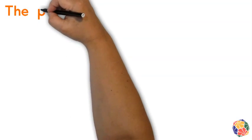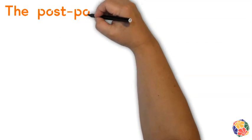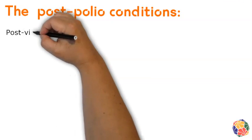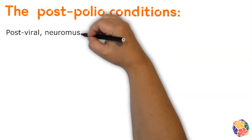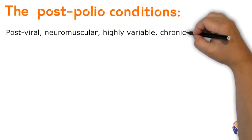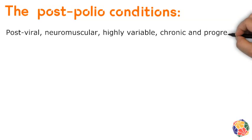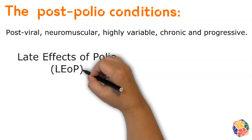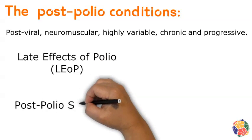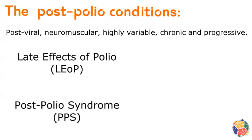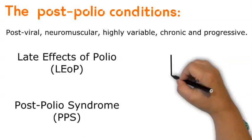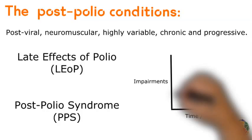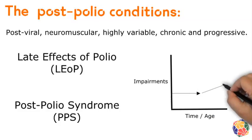What are the post-polio conditions? Post-polio conditions are post-viral, categorised as neuromuscular, have highly variable symptoms, and are chronic and progressive. The two conditions are late effects of polio and post-polio syndrome. They present as a gradual progression of impairments in areas affected by the polio virus, as a consequence of that early damage.